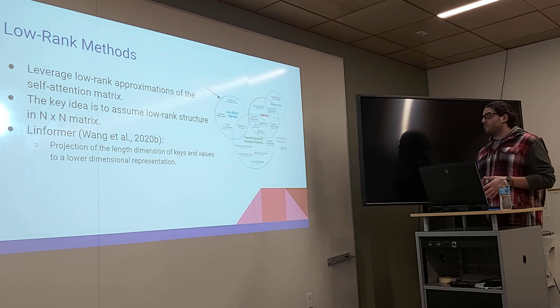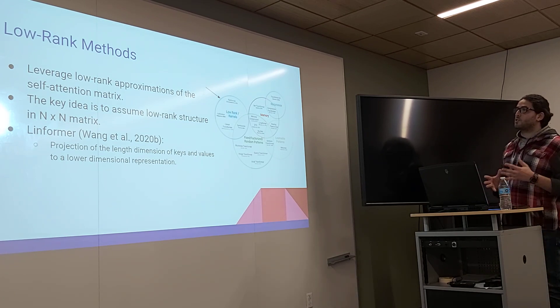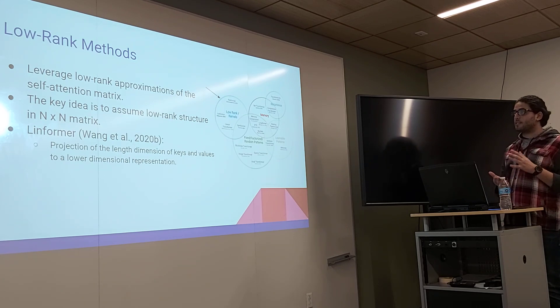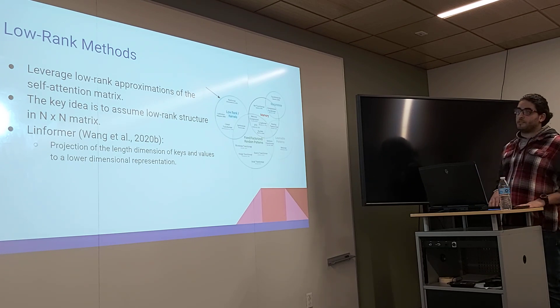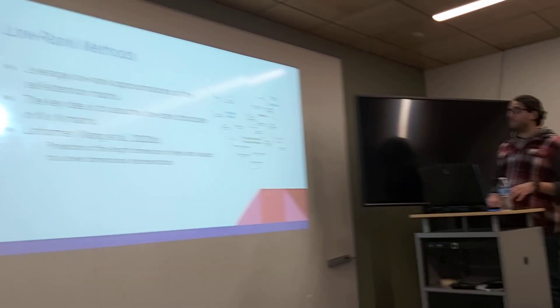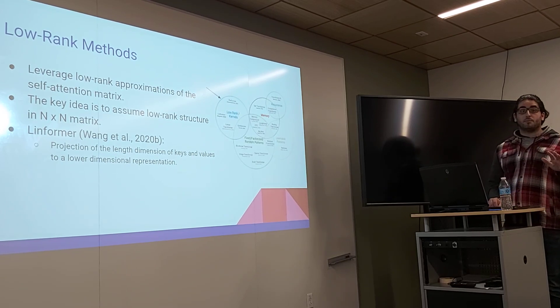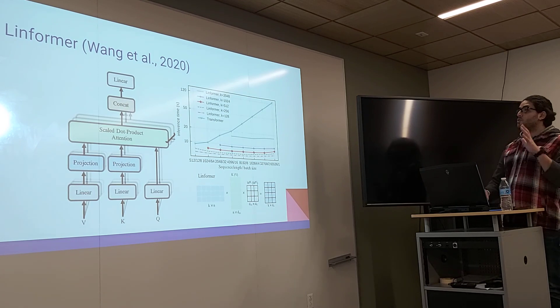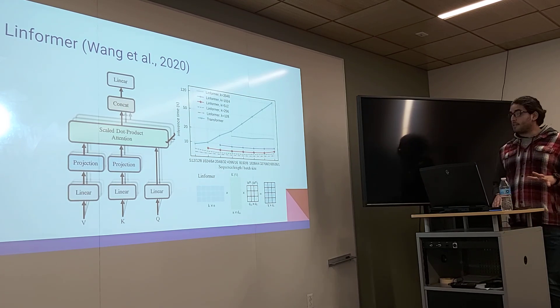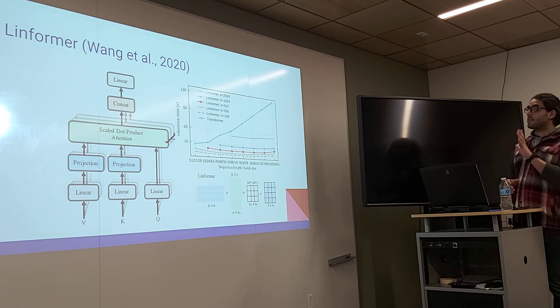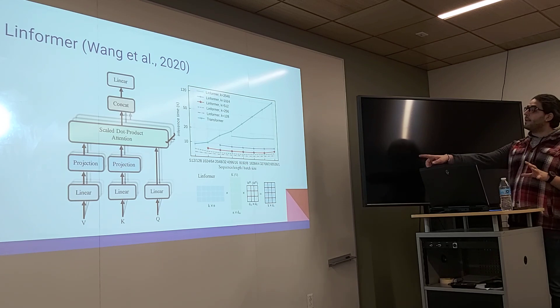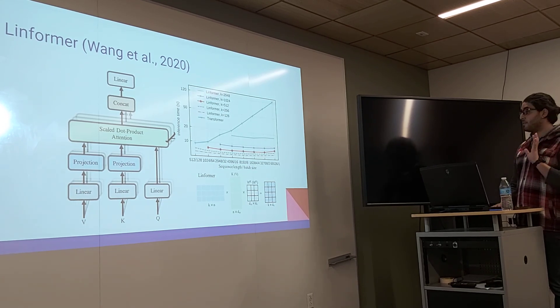We go to the next category, which is the low rank method. Here we leverage low rank approximations of the self-attention matrix. The key idea is to assume low rank structure in the attention matrix. Here we bring the Linformer, which is made by Wang et al., which is a projection of the length dimension of keys and values to a lower dimensional representation. As I just said, the key idea is to project the keys into a random, we do a random projection over the N-dimension, not the D-dimension.